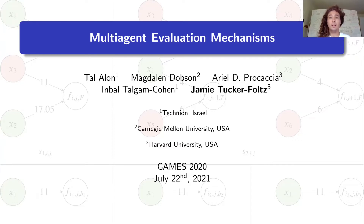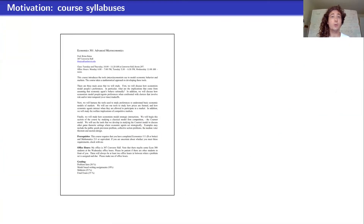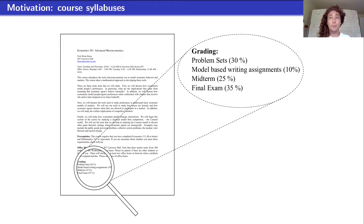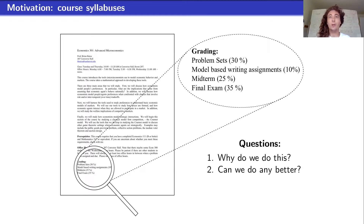This paper is about a mechanism design problem motivated by the design of course syllabuses. Many of you in the audience have probably written or at least seen one of these before, and typically the grading section looks something like this. There are several subcategories that students are graded on, combined into a total grade via some linear combination of the subgrades. So the question I want to ask is: why do we even do this? What is the point of making it 30%, 10%, 25%, 35%, etc.? And to answer whether we can do something better, we really need to ask what the objective is in the first place by making these grading schemes look like this.